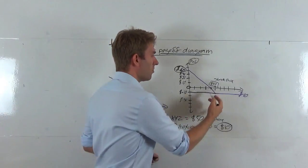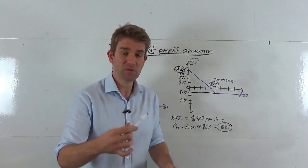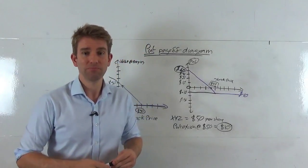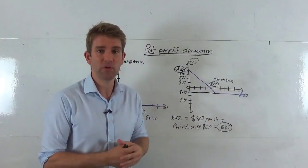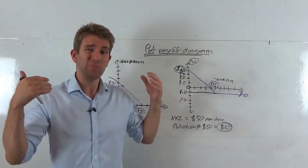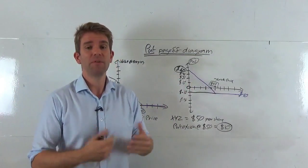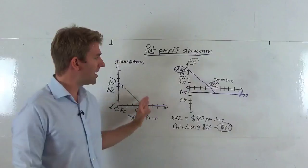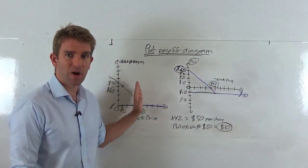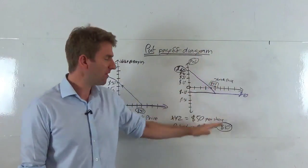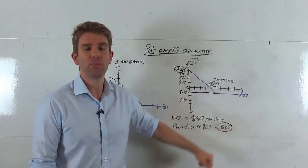So the breakeven point is $40, and when we get to $50 we've lost the full premium. It's important to note that the breakeven point is going to be the strike price minus the price we paid for the option, because we have to cover the premium before we make any money. There are two different ways of visualizing it: the value of the option at expiry, and the P&L which depends on the price we paid for the option.